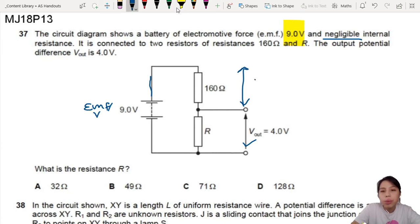So if here already dropped 4 volts, this one must drop 5 volts. If not, where your volts come from? The total must equal whatever is supplied from your battery. So 5 volts, 4 volts.